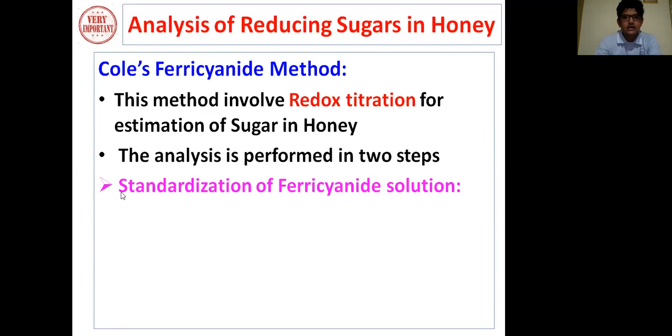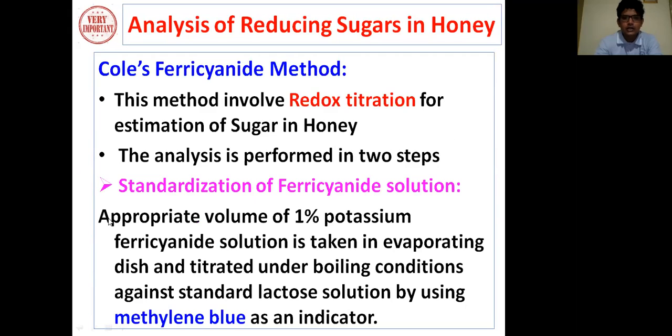First step is standardization of ferricyanide solution. Appropriate volume of 1% potassium ferricyanide solution is taken in evaporating dish and titrated under boiling condition against standard lactose solution by using methylene blue as an indicator.